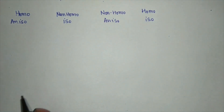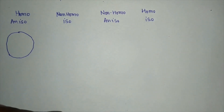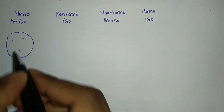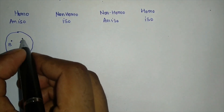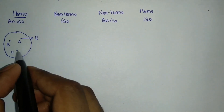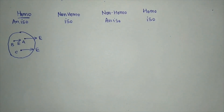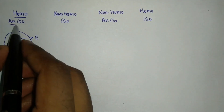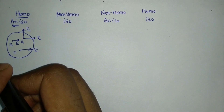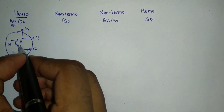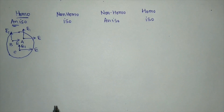For the homogeneous but anisotropic case, if I choose points A, B, and C on the object, the engineering property is the same in one direction at all locations — it is E everywhere — because of the homogeneous property. But if I change the direction, the value changes because it is anisotropic. So at a different direction, the value becomes E' at all points — same across locations but different across directions.